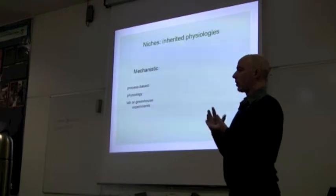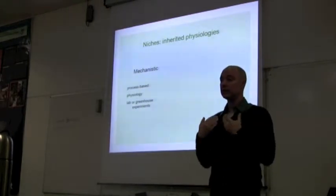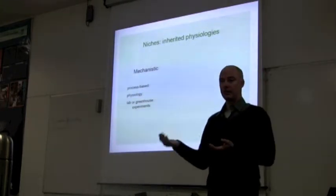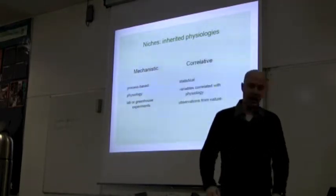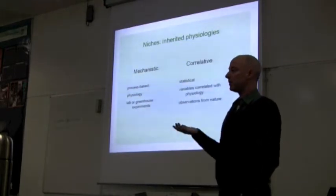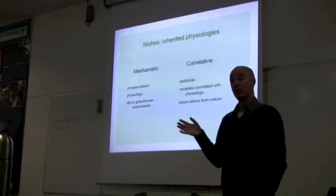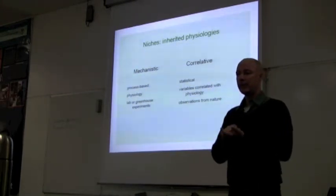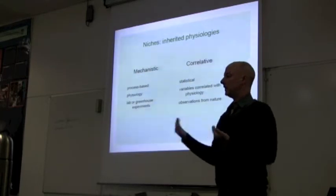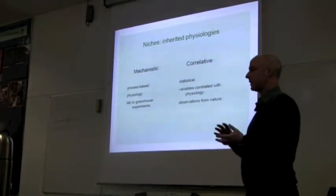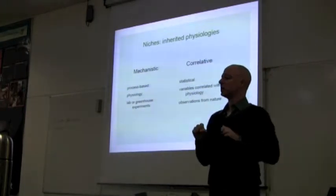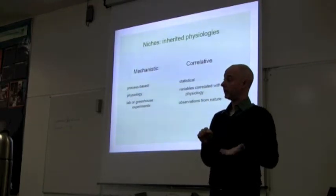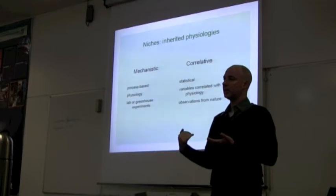This is process-based models that are based usually somehow on physiology and often with lab experiments or greenhouse experiments. A very different perspective is correlative approaches that are statistical models that we can develop, and they are based not directly on physiology but variables that somehow are related to physiology. Instead of experimental work, this is based on observations that we take from nature.